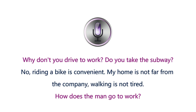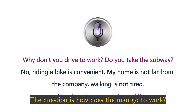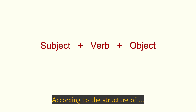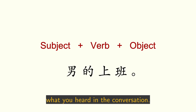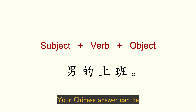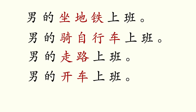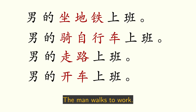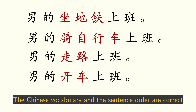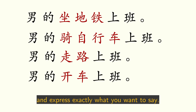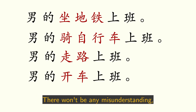The question is: how does the man go to work? According to the structure of subject plus verb plus object, the basic Chinese expression is 男的上班. Then you add different mode words depending on what you heard in the conversation. Your Chinese answer can be: 男的坐地铁上班, 男的骑自行车上班, 男的走路上班, or 男的开车上班. These are all very correct answers. The Chinese vocabulary and sentence order are correct and express exactly what you want to say. There won't be any misunderstanding.